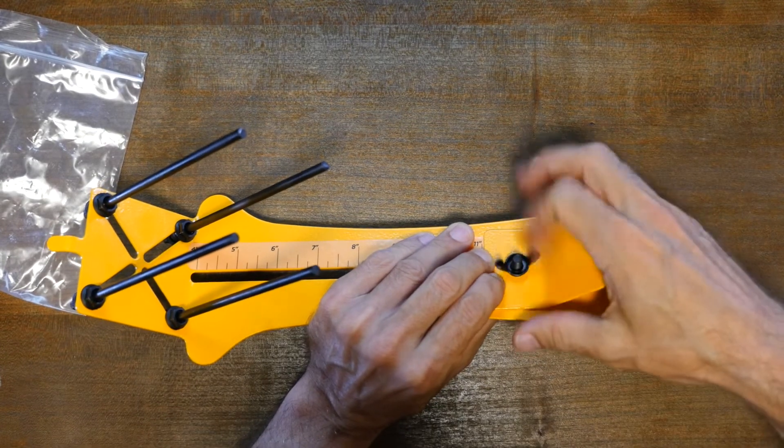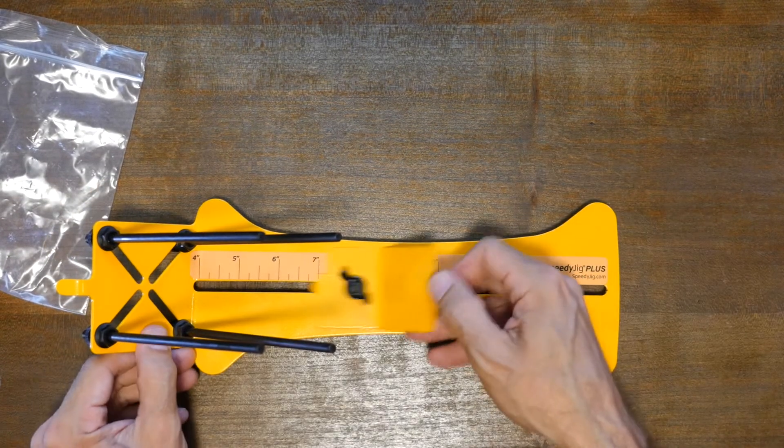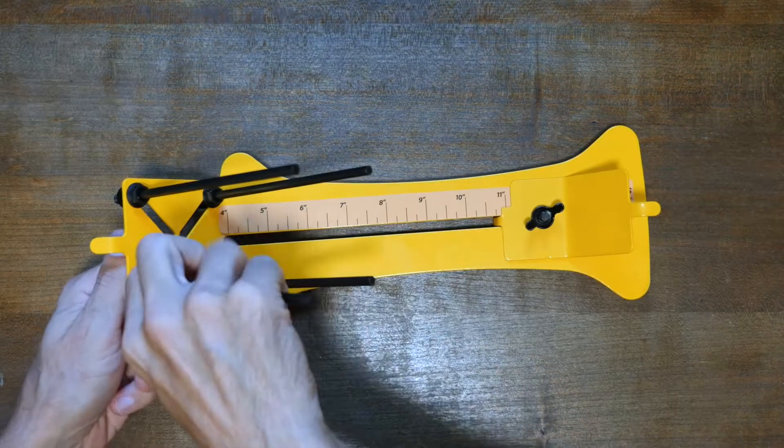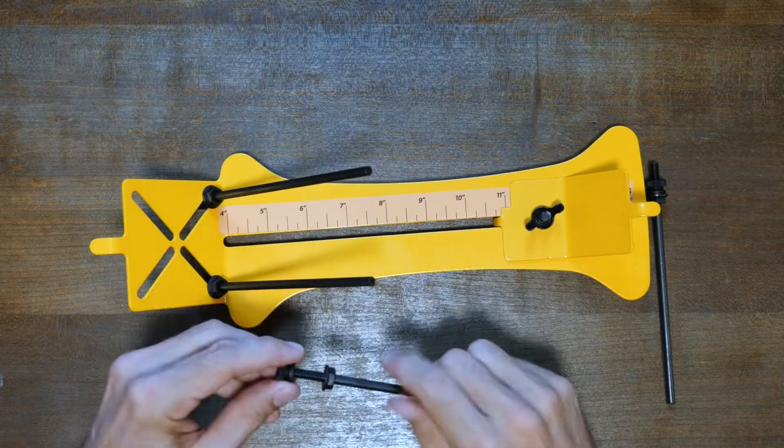With the jig assembled, I think it looked great, but the next step was to give it a try and make a bracelet. So I removed the Monkey Fist rods to make room for my weaving.